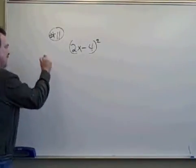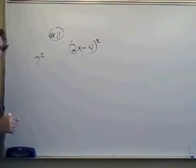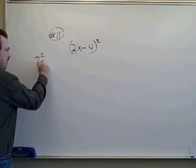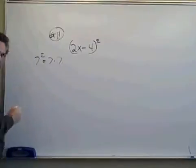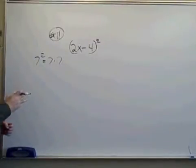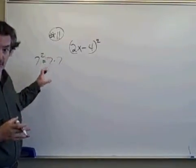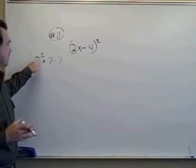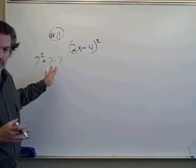I mean, isn't that what 7 to the second power means? Doesn't it mean write the 7 down twice and multiply so that the result is 49, not 14. It's not 7 times 2. It's 7 written down twice, and we're multiplying.